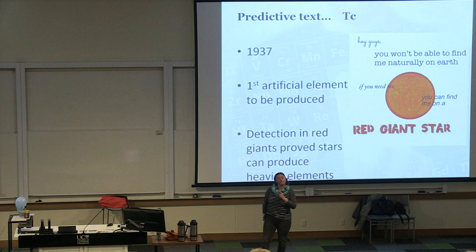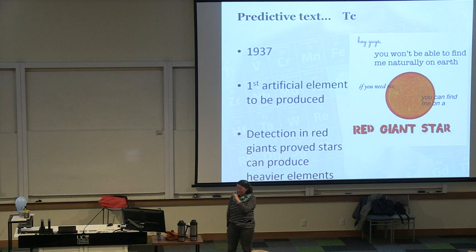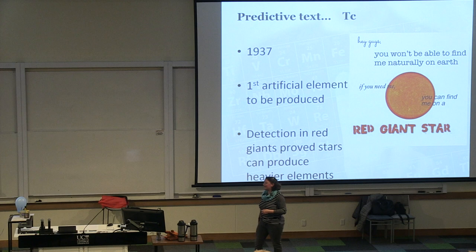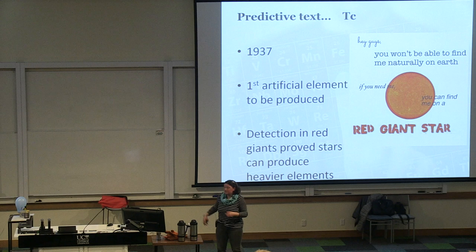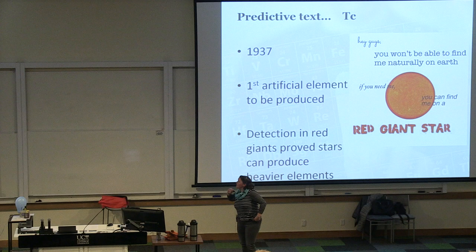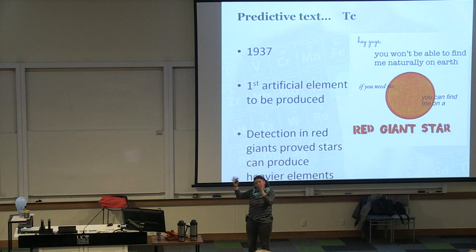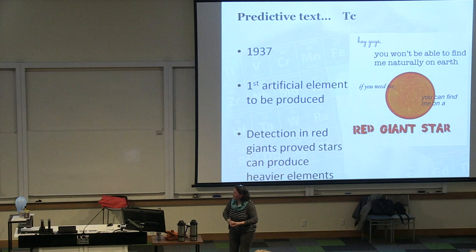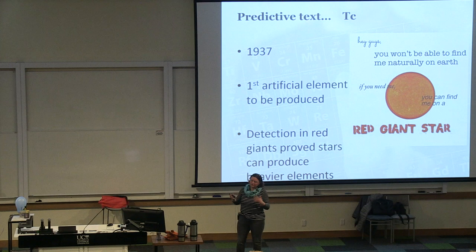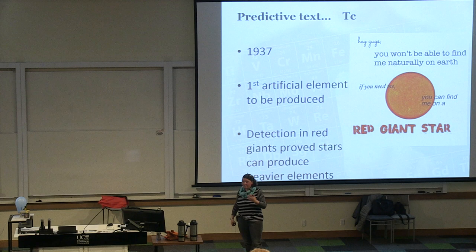I mentioned technetium earlier — right in the middle of those transition metals. It wasn't found until 1937, and there's a very good reason: it doesn't actually exist on Earth. It's what we call an artificial element, artificially produced. You won't naturally find it on Earth, but you will find it in space. Its detection in red giants proved that these big stars can actually produce much heavier elements. Up until that point it was really only thought that there was hydrogen and helium out there, and not a lot else.